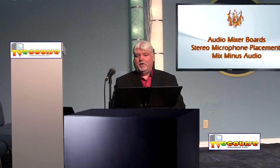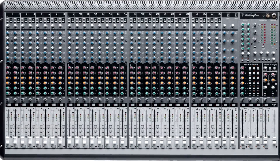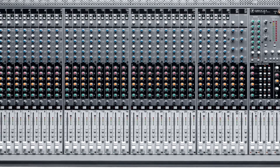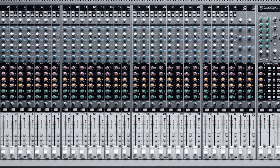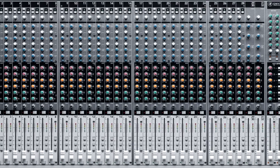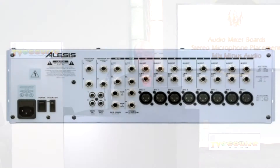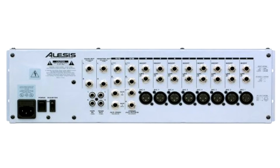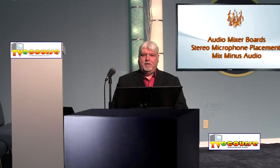The basic layout of a mixer includes a number of channels with mic inputs, line inputs, and sometimes digital or fiber inputs, all fed into the back of the mixer. Each channel corresponds to an input: input one is mic one, input two is mic two, and so on. Some channels handle CD roll-in, remote video roll-in with audio, network feeds, or telephone feeds — all coming into the mixer.